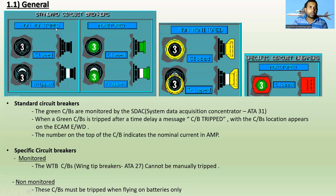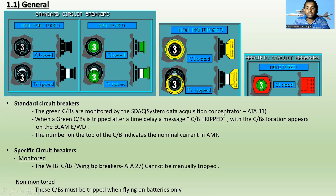Circuit breaker locations — first, general. You can see the standard circuit breakers, which include monitored and non-monitored types. This is the closed position and this is the tripped or open position. The green circuit breakers are monitored by the SDAC — System Data Acquisition Concentrator, ATA Chapter 31. When a green circuit breaker is tripped after a time delay, a message 'Circuit Breaker Tripped' with the circuit breaker location appears on the ECAM Engine Warning Display. The number on the top of the circuit breaker indicates the nominal current in amperes — for example, three amperes.